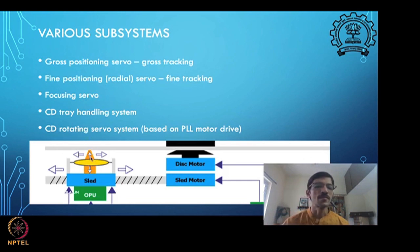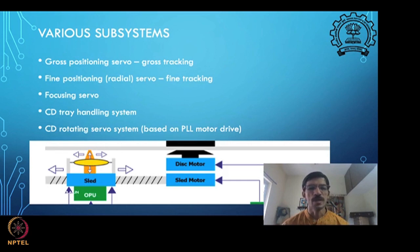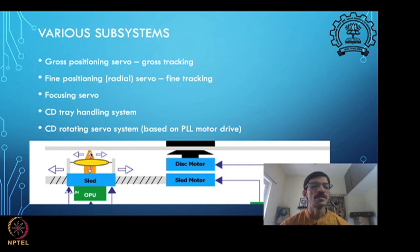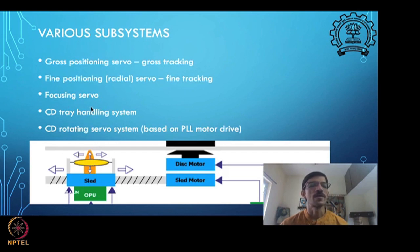The CD surface may have small undulations in the range of a few microns, or there may be small scratches on the surface — even micron-scale scratches can be harmful to reading data. You need to tightly focus the laser onto the surface. So there must be some kind of focusing servo, or auto-focusing, happening inside the CD drive — a fine motion given in the focusing direction.